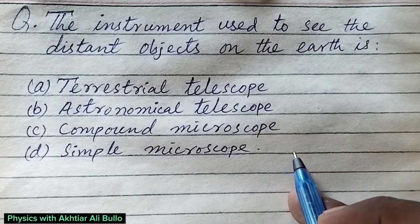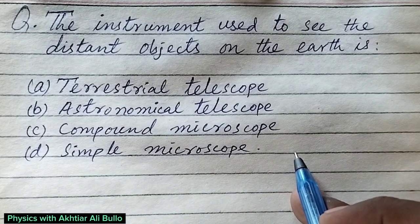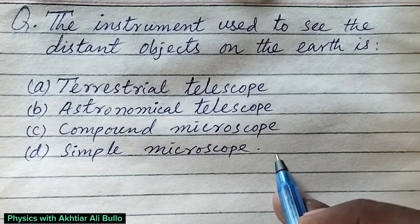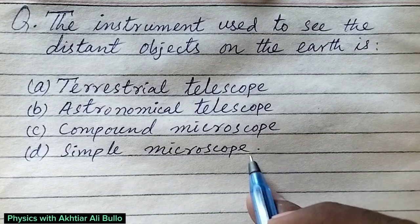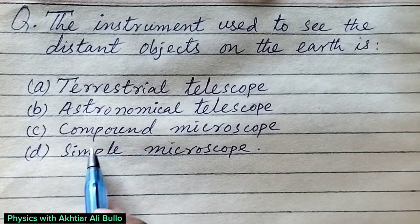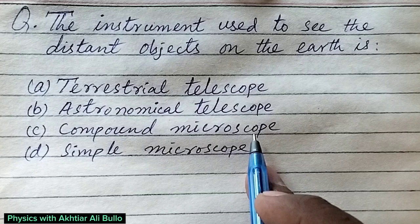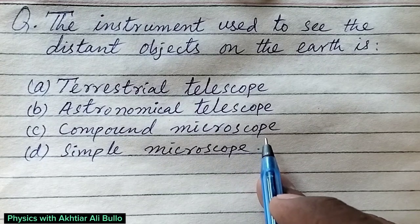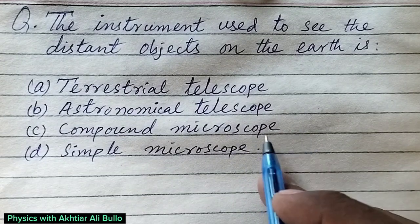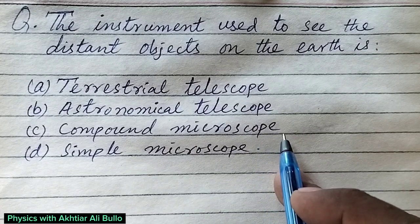Simple Microscope is also known as magnifying glass. So, it enlarges the size of object. And Compound Microscope is used to see very small objects which cannot be seen with naked eye.